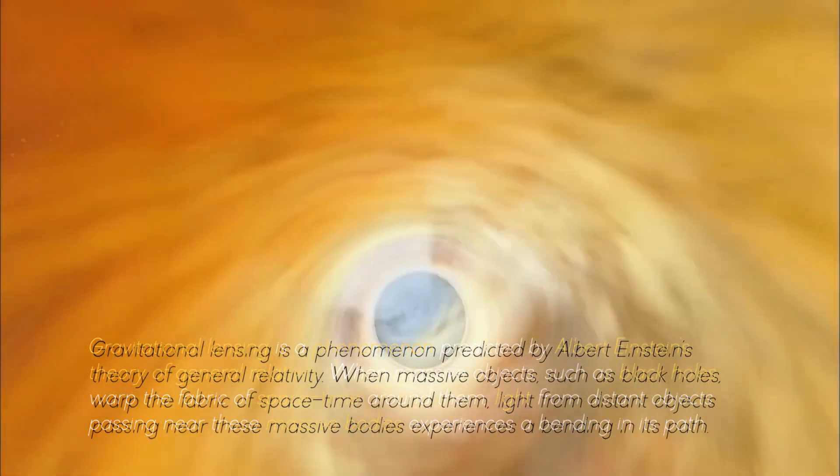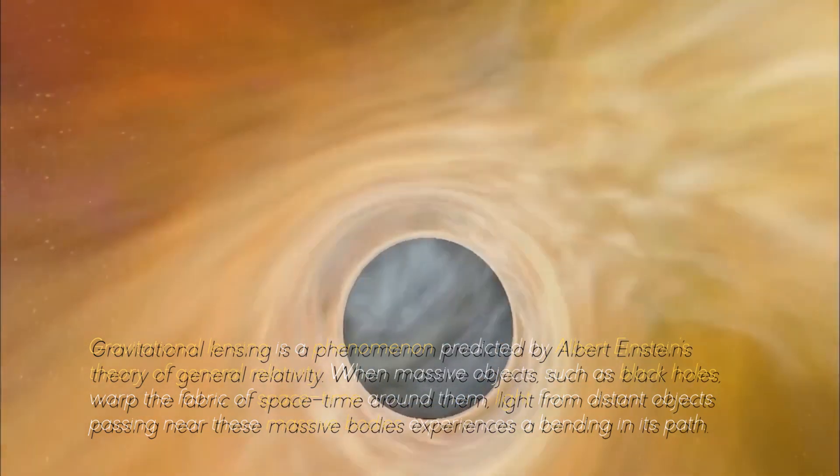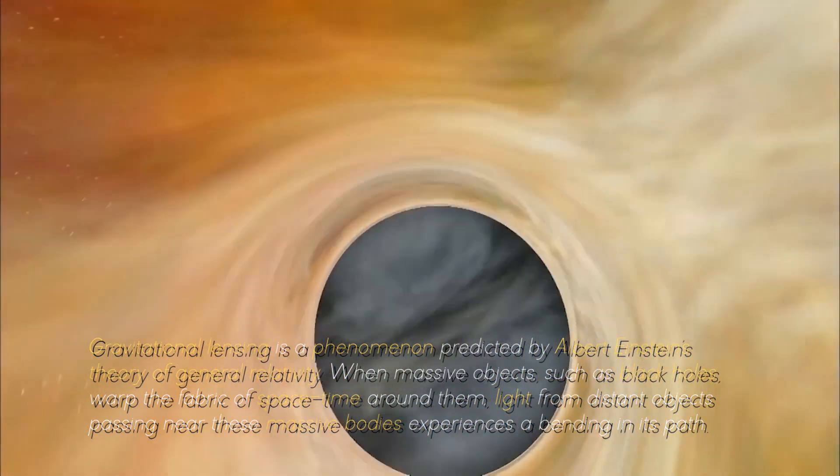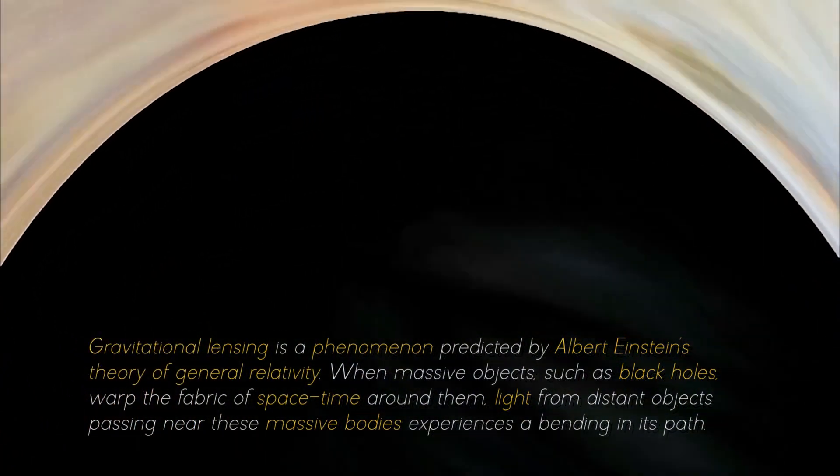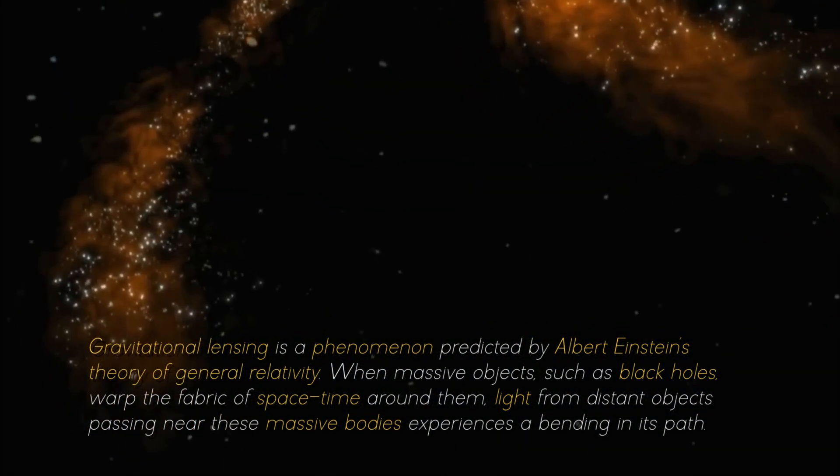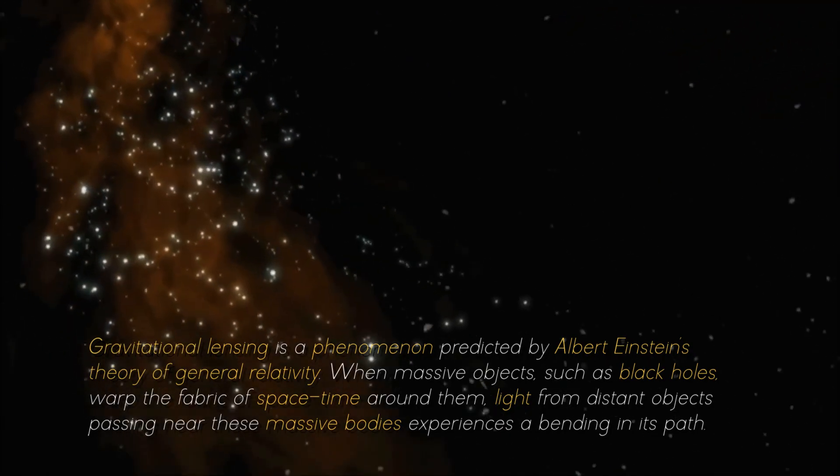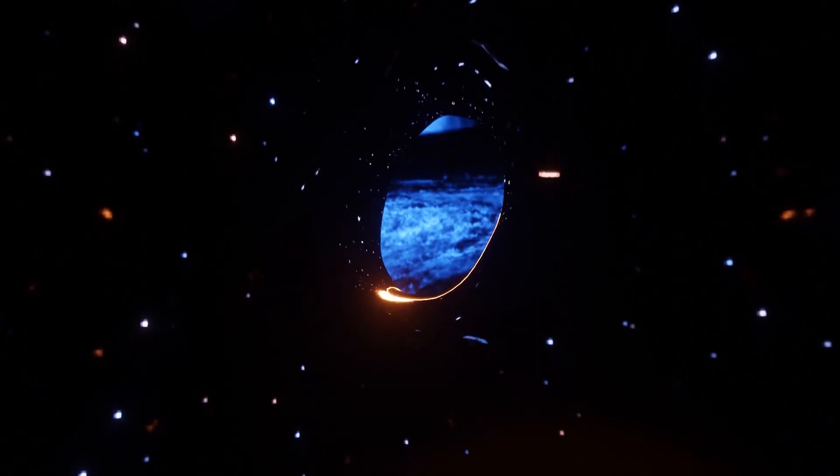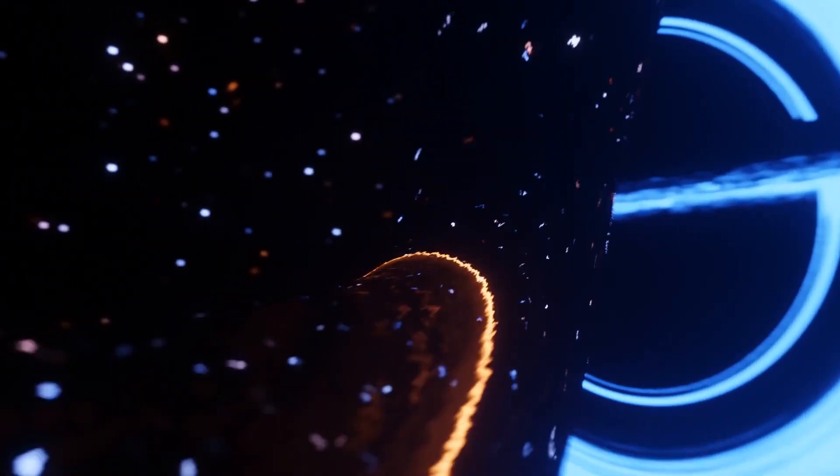Gravitational lensing is a phenomenon predicted by Albert Einstein's theory of general relativity. When massive objects, such as black holes, warp the fabric of space-time around them, light from distant objects passing near these massive bodies experiences a bending in its path. This results in a visual distortion or magnification of the object's image.